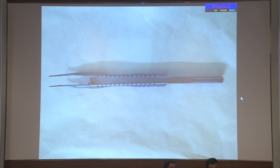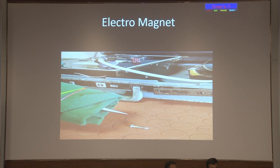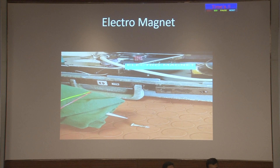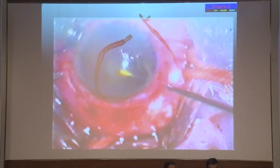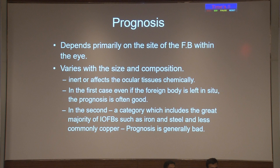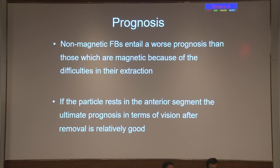To conclude: the magnet, forceps, and the electromagnet — in use for over 40–45 years — are all useful in retrieving foreign bodies, especially from the sclera. Prognosis depends on the site of the foreign body and the extent of macular damage. Any reactive metallic foreign body — iron, nickel, or copper — must be removed to prevent metallosis. Non-magnetic foreign bodies carry a very bad prognosis because retrieval is difficult. Previous operations, lens damage, and poor visibility worsen prognosis. Most importantly, preventing sympathetic ophthalmia of the fellow eye remains the top priority.